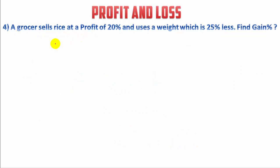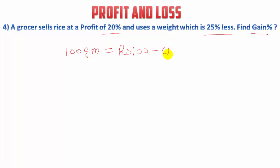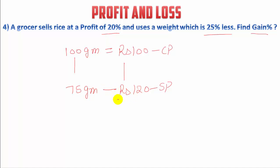Fourth question: A grocer sells rice at a profit of 20% but uses a weight which is 25% less. Find the gain percentage. Let's say he buys 100 grams of rice for Rs.100 (cost price). With a 20% profit, the selling price is Rs.120. But instead of selling 100 grams, he sells 25% less, meaning he sells only 75 grams for Rs.120. The actual cost price of 75 grams is Rs.75.